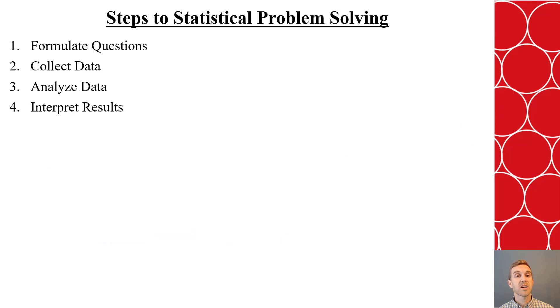Now, as we're trying to solve statistical problems, we have 4 common steps that we will follow. First, we will formulate questions that are statistical in nature. We will then collect data using a random sample. We will then use different statistical methods to help us analyze that data. And once it's analyzed, we will use the results to help us interpret the results to the population or maybe predict something about the population.